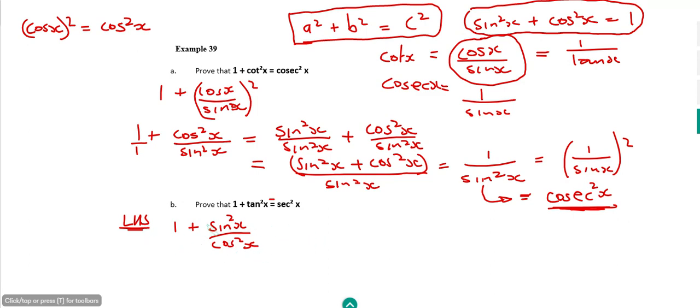And because I want to add the 1 to this fraction, I need to write the 1 with the denominator of cos²x. So I'm going to have to multiply the top as well by cos²x. So that could be written as being cos²x over cos²x for the 1, plus the sin²x over cos²x.